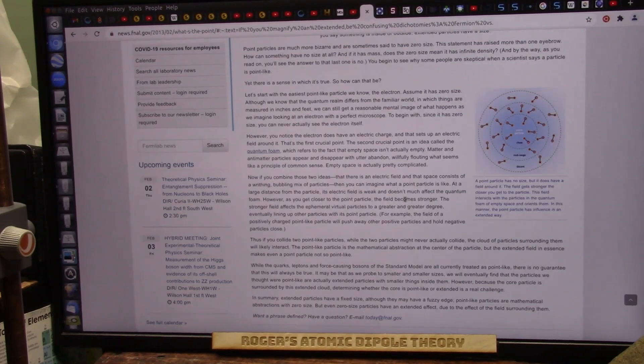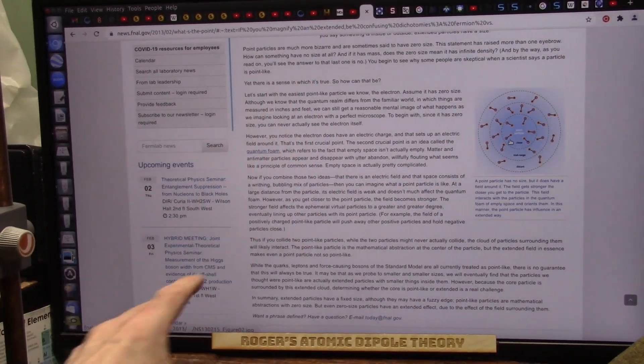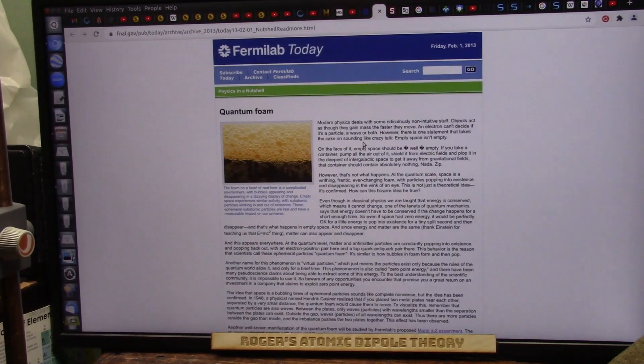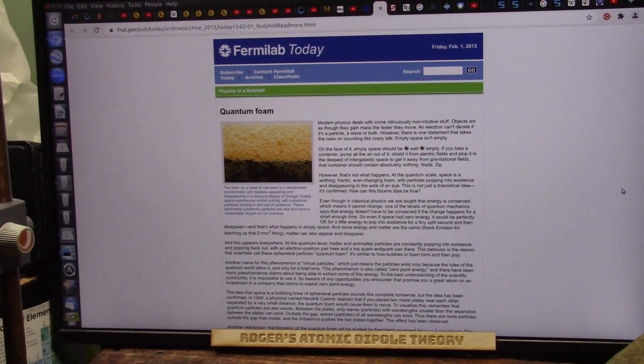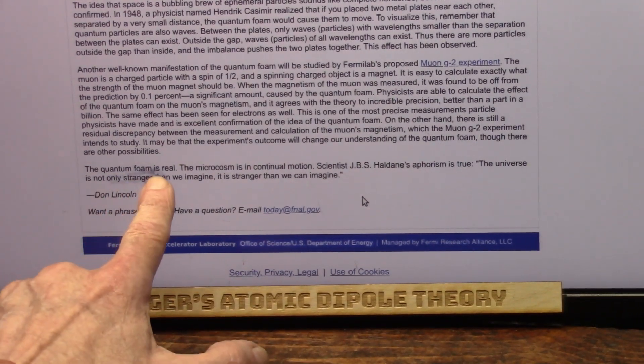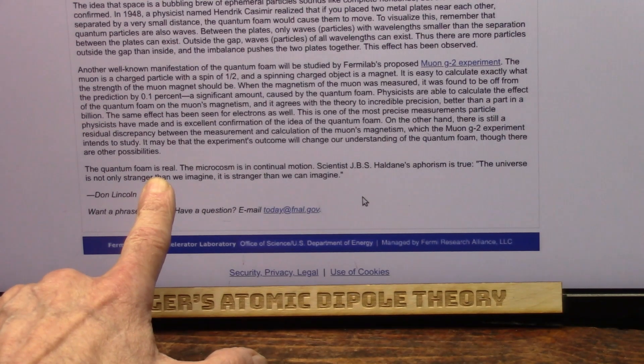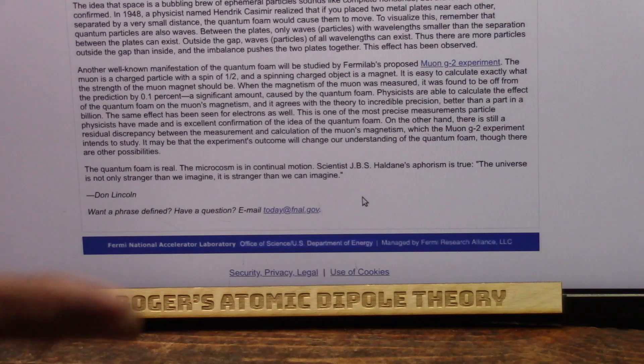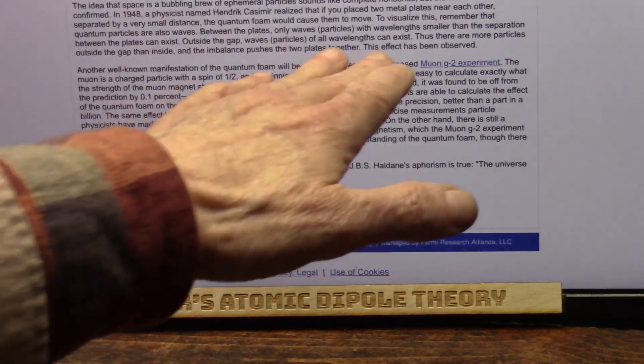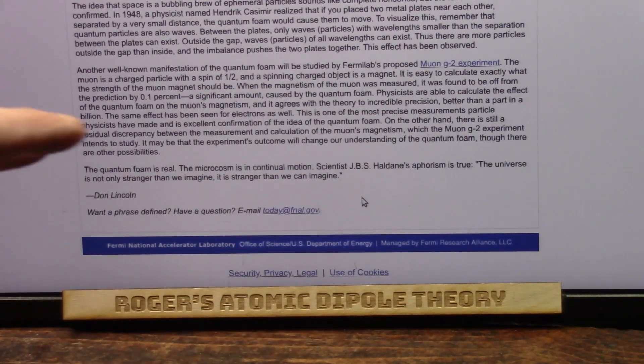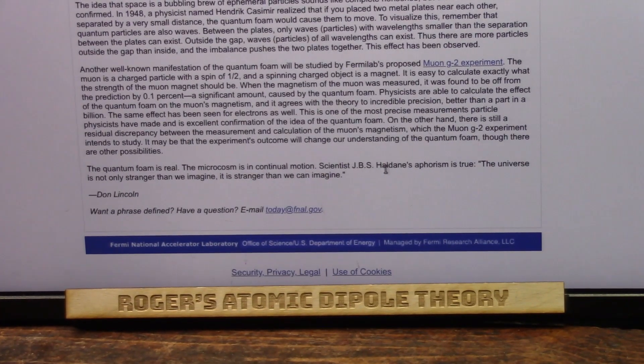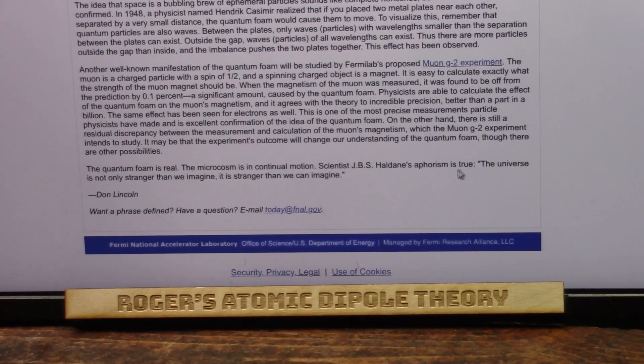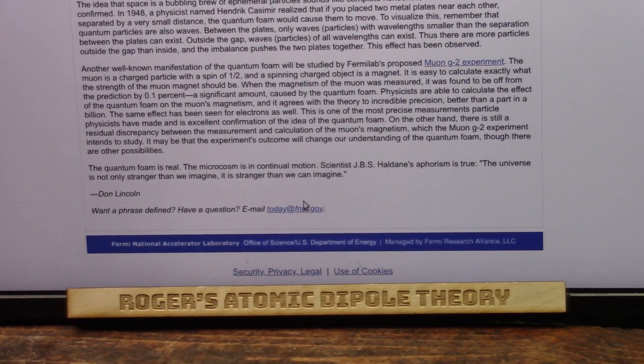What's the point? Well, there's the two particles. And he says that the universe is filled with this quantum foam. And I agree 100%. Those are the particles that I just talked about. Empty space isn't empty. What is the quantum foam? Quantum foam is real. This is Don Lincoln from Fermilab. They know it's real. It says the microcosm is continual motion. Well, something's got to be there for it to be in motion. So something is obstructing field to field. It's called a Casimir effect. Light is slowing down. It says the microcosm is continual motion. Scientist JBS Haldane's aphorism is true. The universe is not only stranger than we imagine, it is stranger than we can imagine. Well, I can imagine a lot of strangeness.